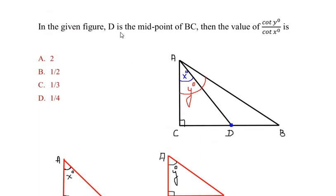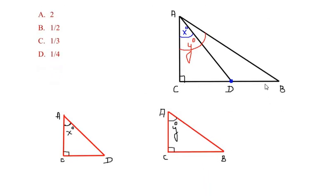Now the other thing they have mentioned is D is the midpoint of BC, which means D divides the line BC into two equal halves. So we can write CD is equal to DB, or we can also write BC is equal to two times CD.